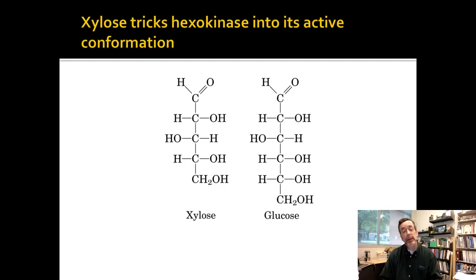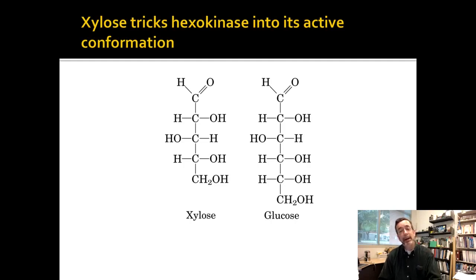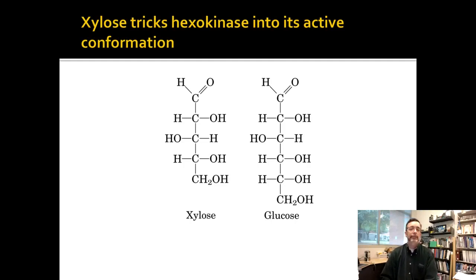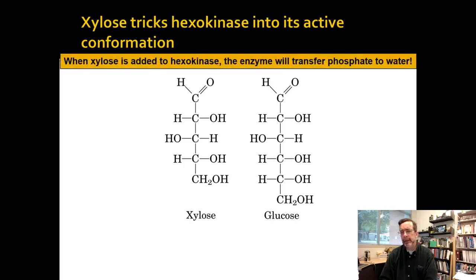We can see this works using a trick: xylose is a shorter sugar that does not have the C6 carbon — the catalytic part — but has all the other carbons that are the binding parts. Xylose will still bind and trick hexokinase into closing, and then ATP will bind, but the phosphate will be transferred to water because there is no carbon-6 for it to bind to. This is why xylose acts as an inhibitor for hexokinase, completely disrupting glycolysis — congratulations, you've just made an ATP hydrolysis machine.